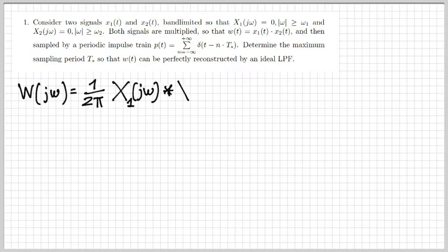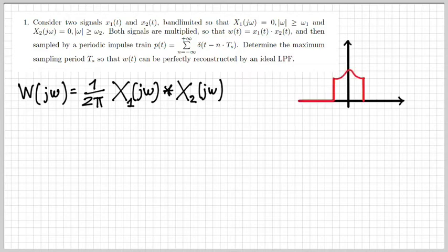The Nyquist frequency is typically twice the maximum bandwidth of the signal. To find the bandwidth we need to look at the Fourier transform of w(t), which is W(jω). We know that multiplication in the time domain corresponds to convolution in the frequency domain, so W(jω) is given by 1 over 2π times the convolution of the Fourier transforms of x1 and x2 — that is, X1(jω) and X2(jω).